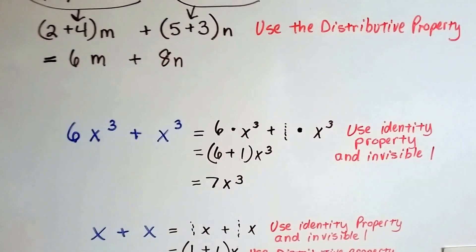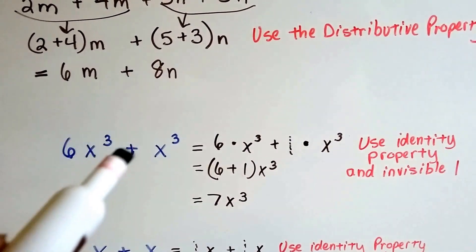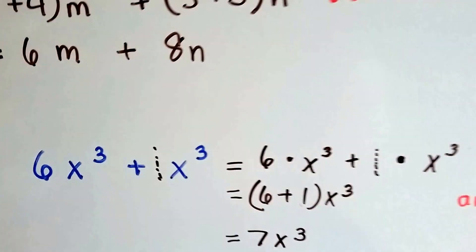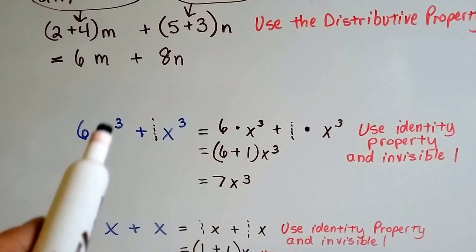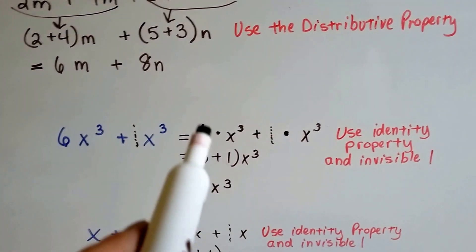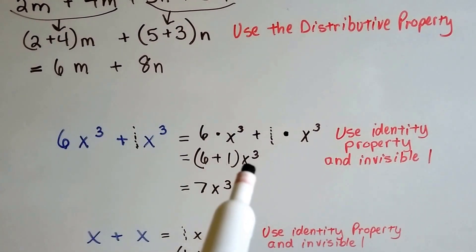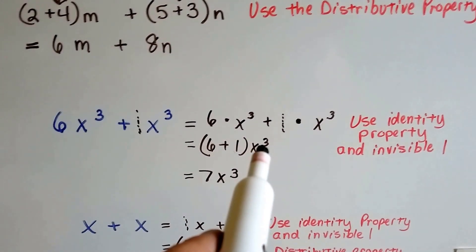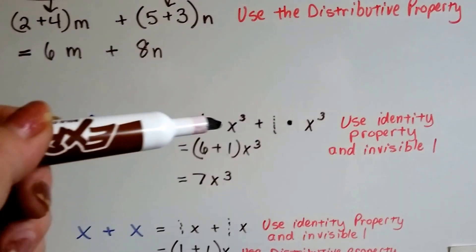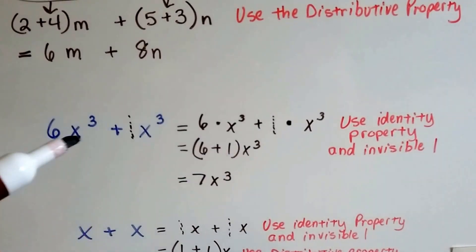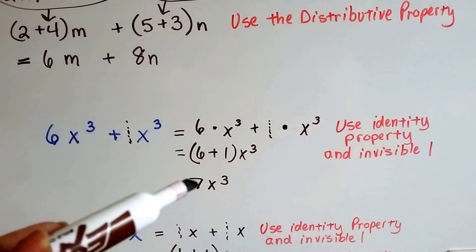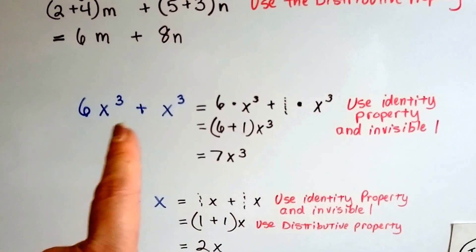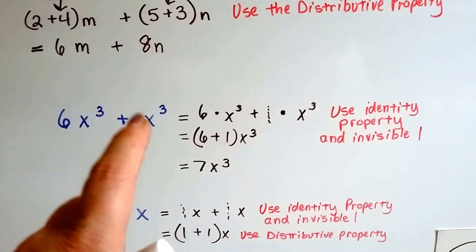Let's look at this one — it uses the identity property again. We've got 6x to the 3rd power plus x to the 3rd power. Our friend the invisible 1 is here, so that means we've got 6 times x to the 3rd power plus 1 times x to the 3rd power. We take the coefficients, the 6 and the 1, and add them together. Using distributive property with x to the 3rd power on the outside, we get 6 plus 1 equals 7, so we have 7x to the 3rd power. If you didn't think about the invisible 1, you might just leave it as 6x to the 3rd power — but that 1 is sitting in front of that lonely variable.